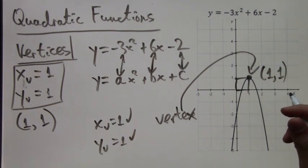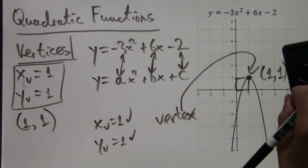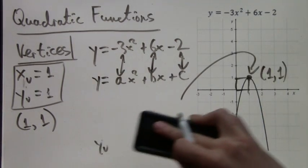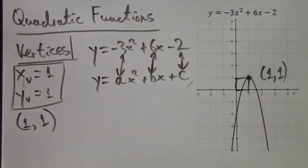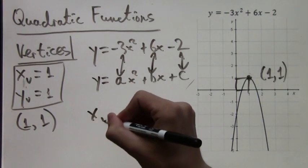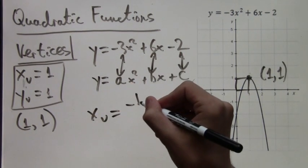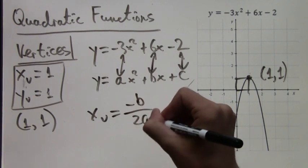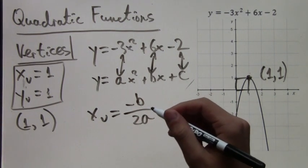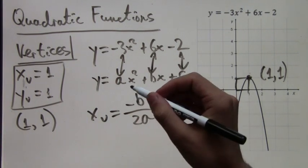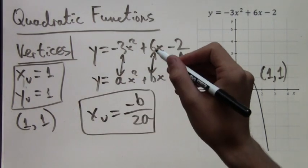And I'd like to highlight again what the formula we used was. The formula is for the x-coordinate of the vertex. We get the y-coordinate by plugging it into the equation. And the x-coordinate is negative b over 2a, where b is the coefficient of the x term, and a is the coefficient of the x squared term.